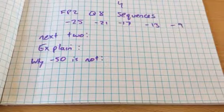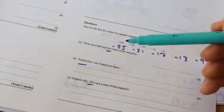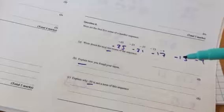We're given a sequence here. Here are the first five terms of the number sequence: minus 25, minus 21, minus 17, minus 13, minus 9.